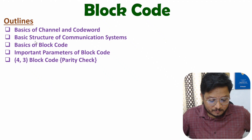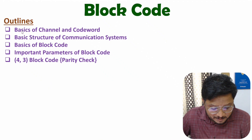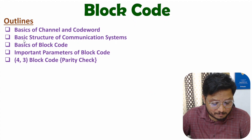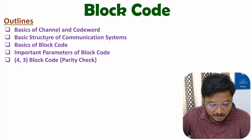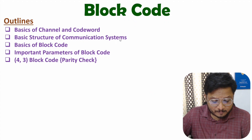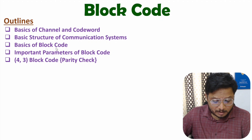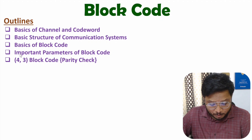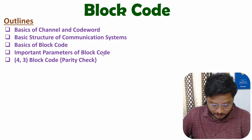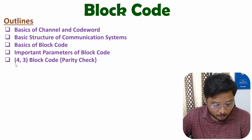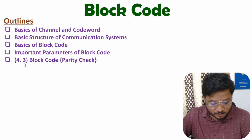In this video, first of all, I'll discuss about basics of channel and codeword. After that, I'll explain basic structure of communication systems. After that, I'll discuss about basics of block code. After that, I'll explain important parameters of block code. And at last, I'll explain one example of block code — that is the 4,3 block code, also known as parity check block code.